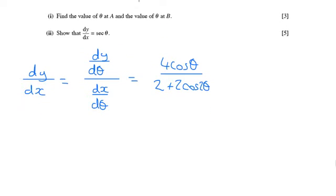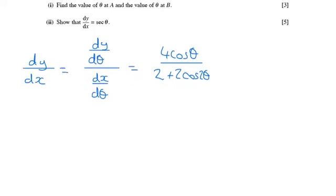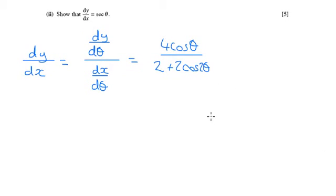Now obviously that looks nothing like sec. So how do we get around that? Well, cos 2 theta, there's a formula, the double angle formula, that says 2 cos squared theta.